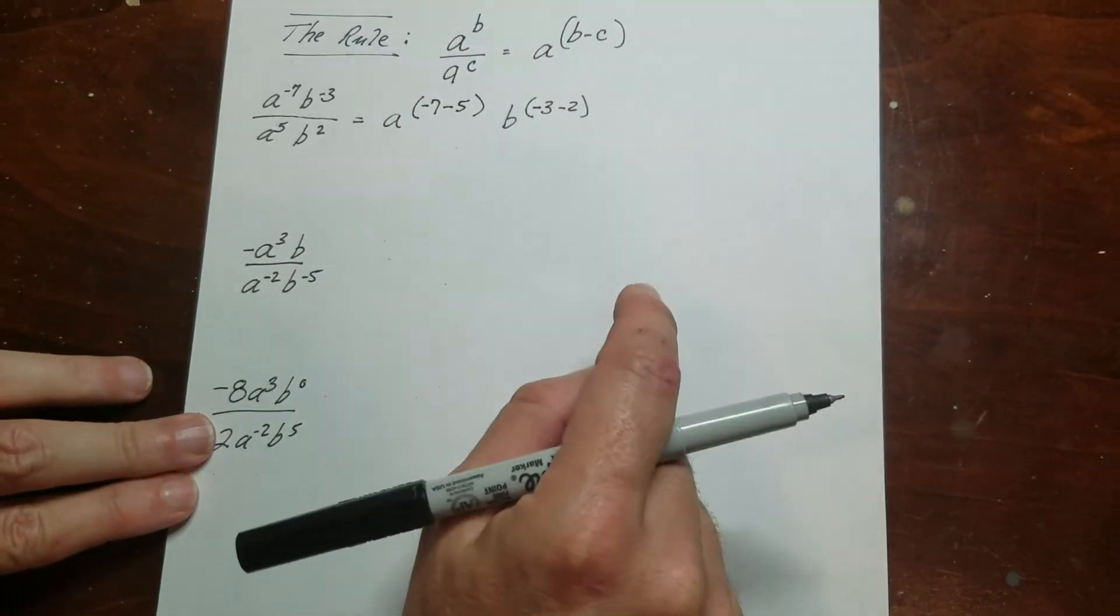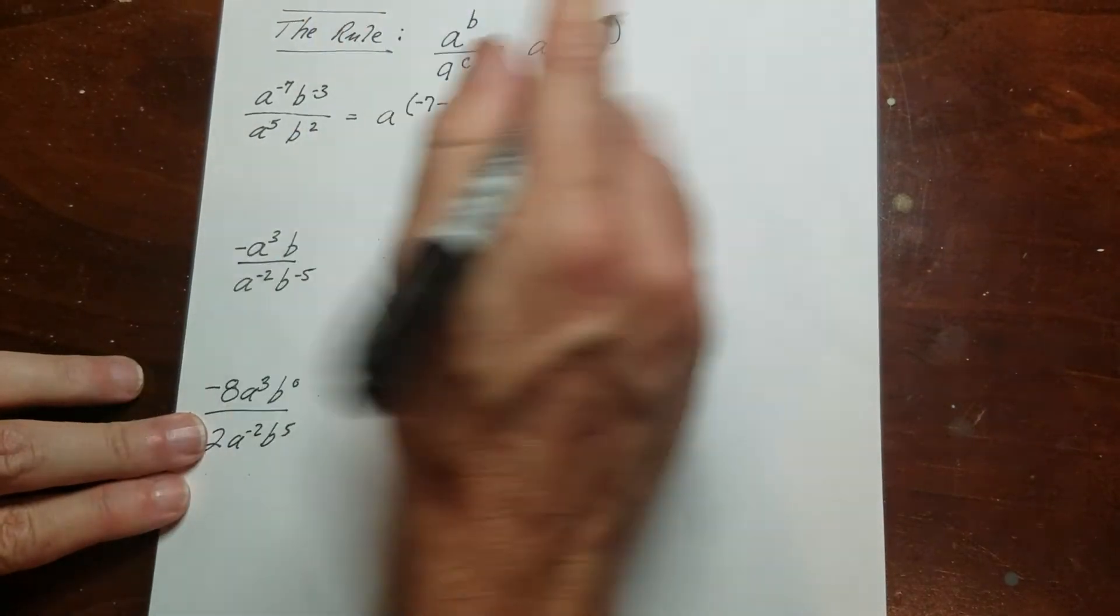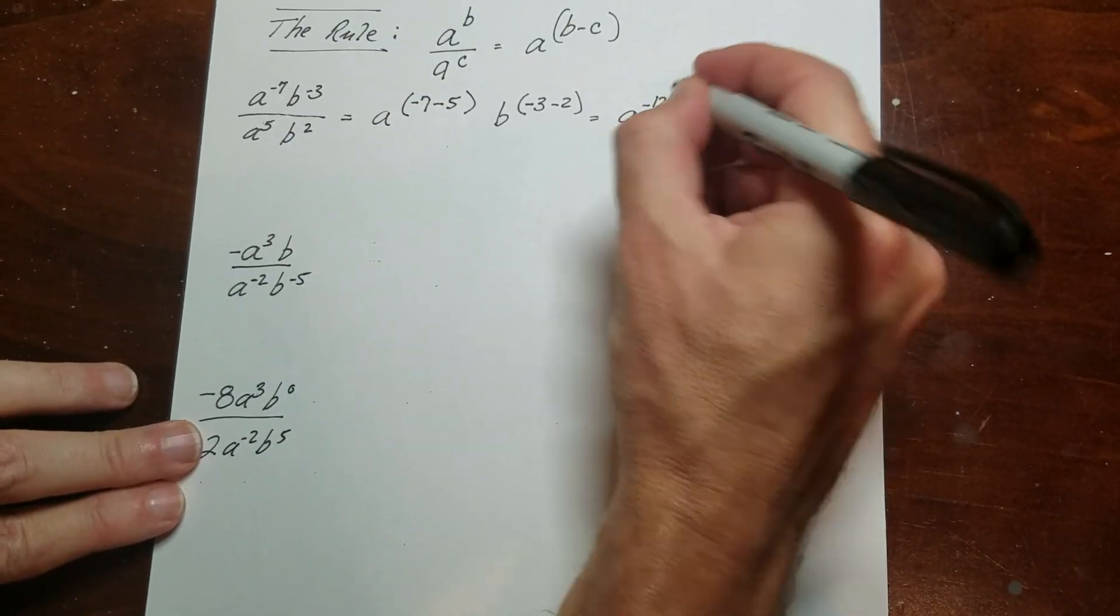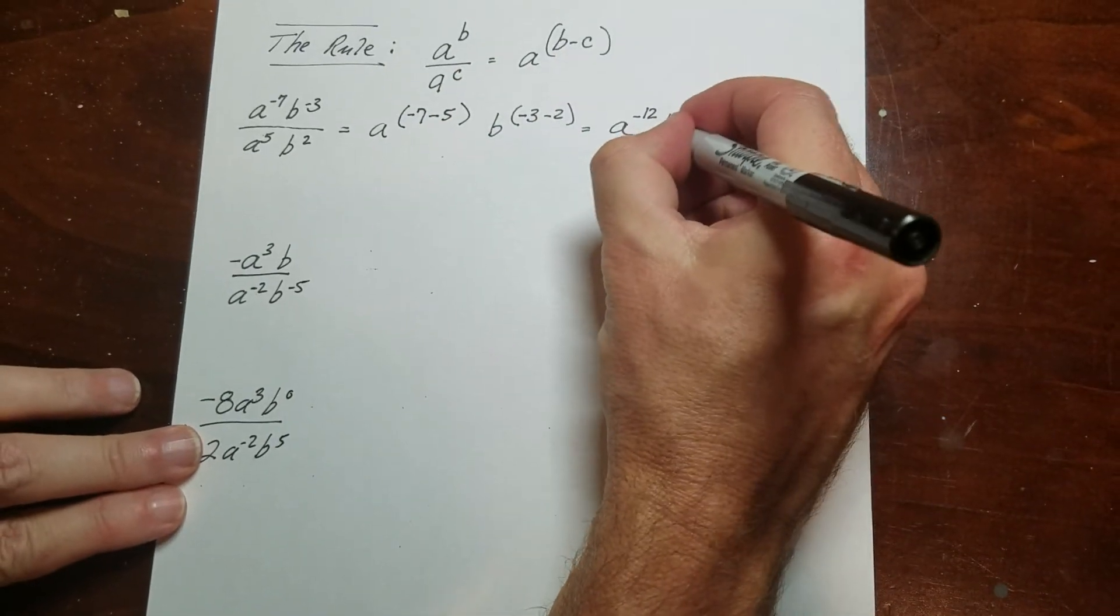You can see the b and the c right here. So then I could just do the same thing. So I get a, if I add this together, I get negative 12. If I add this together, I get b to the negative 5.